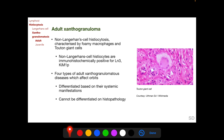Xanthogranulomatosis arises from non-Langerhans histiocytes and occurs in an adult form, which can involve the orbit, and a juvenile form, which involves the eye. These lesions originate from non-Langerhans histiocytes and are characterized by foamy macrophages and Touton giant cells — a ring of multiple nuclei surrounding a central homogeneous cytoplasm with foamy peripheral cytoplasm. These non-Langerhans histiocytes are immunohistochemically positive for LN3 and KiM1P. Four types of adult xanthogranulomatous disease can affect the orbit, differentiated based on their systemic manifestations but not on histopathology.